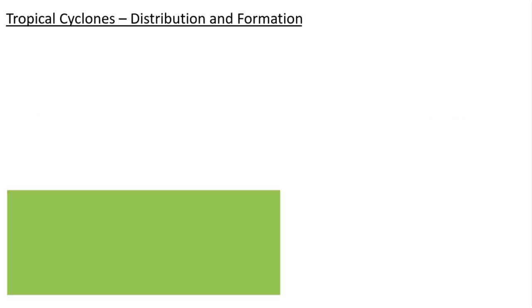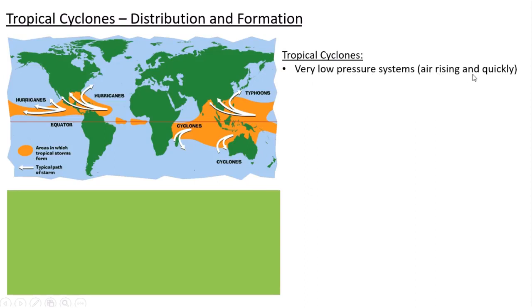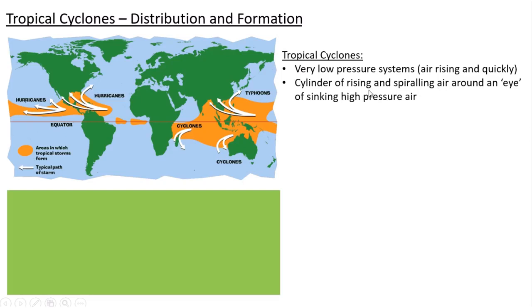In terms of tropical cyclones, you need to know about where you find them. This map shows they occur around the equator in orange zones. Typhoons, cyclones and hurricanes are all the same thing — they are all very extreme low pressure systems. They're a cylinder of rising and spiralling air around an eye, with sinking high pressure drawn into the eye down below, creating a little high pressure zone in the middle where it's very calm with no cloud — known as the eye of the storm.